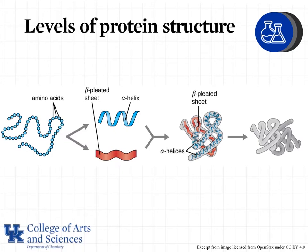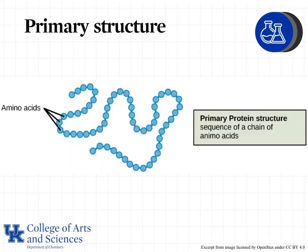We'll go through all four levels of structure, including the properties of them and the types of forces that hold them together. We'll start with primary structure, which we've already covered when we looked at polypeptides. Primary structure is just the sequence of amino acids, and those are held together by amide bonds.